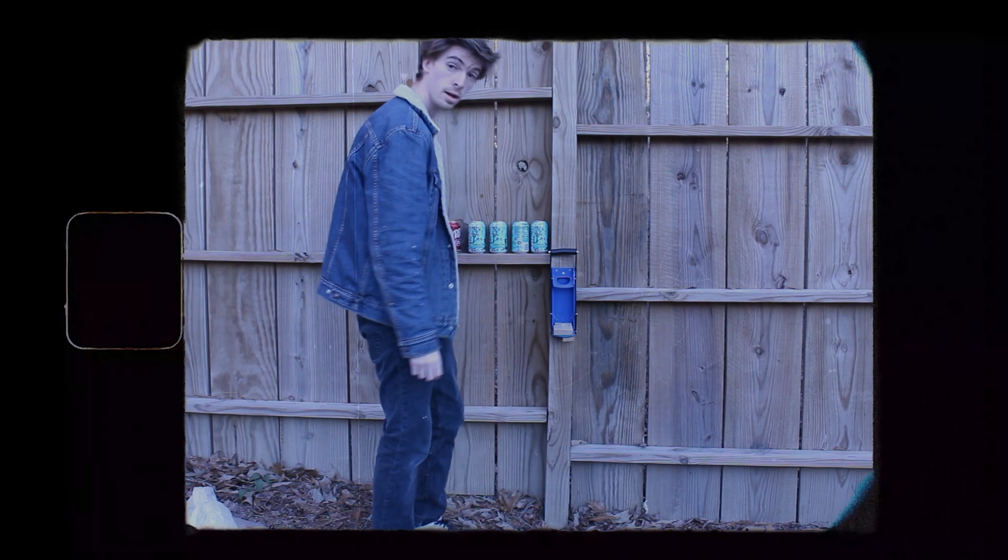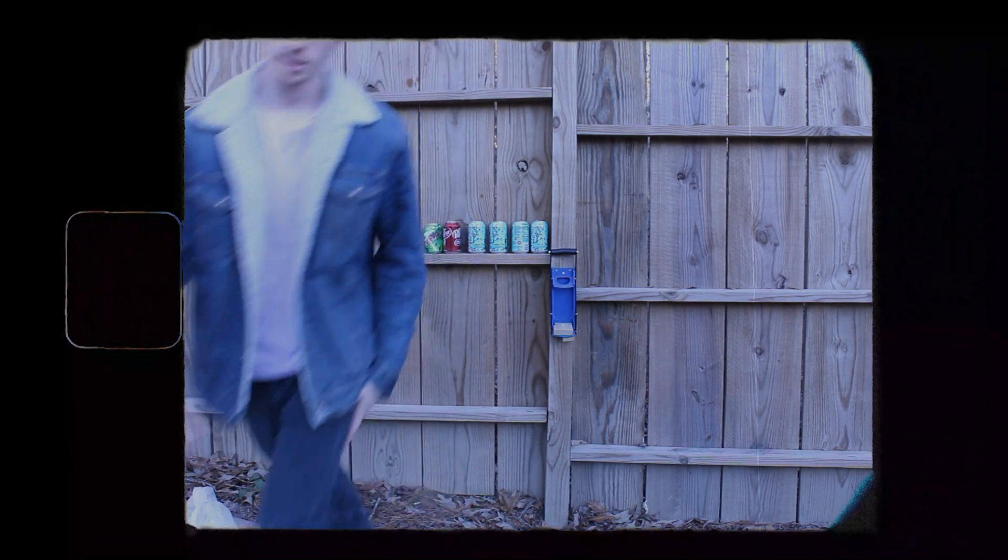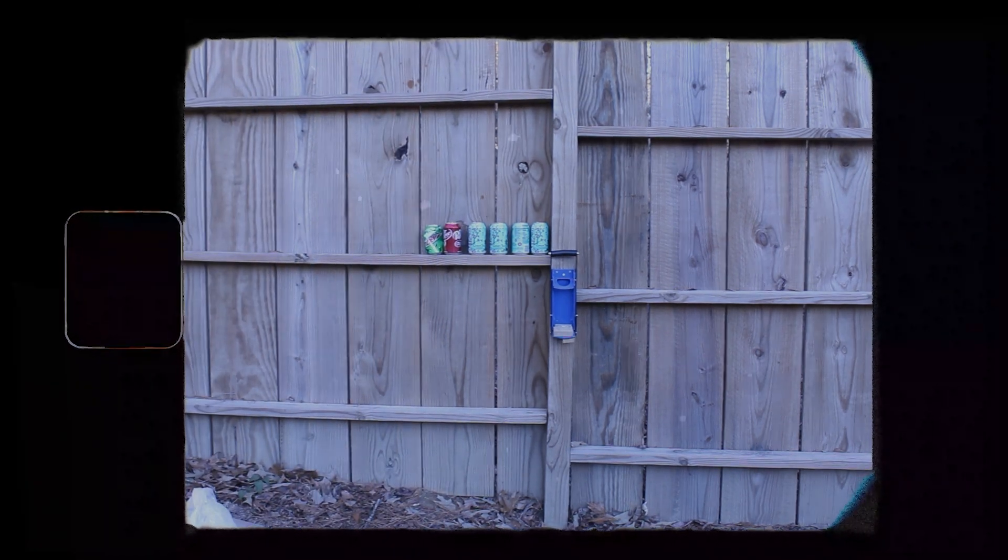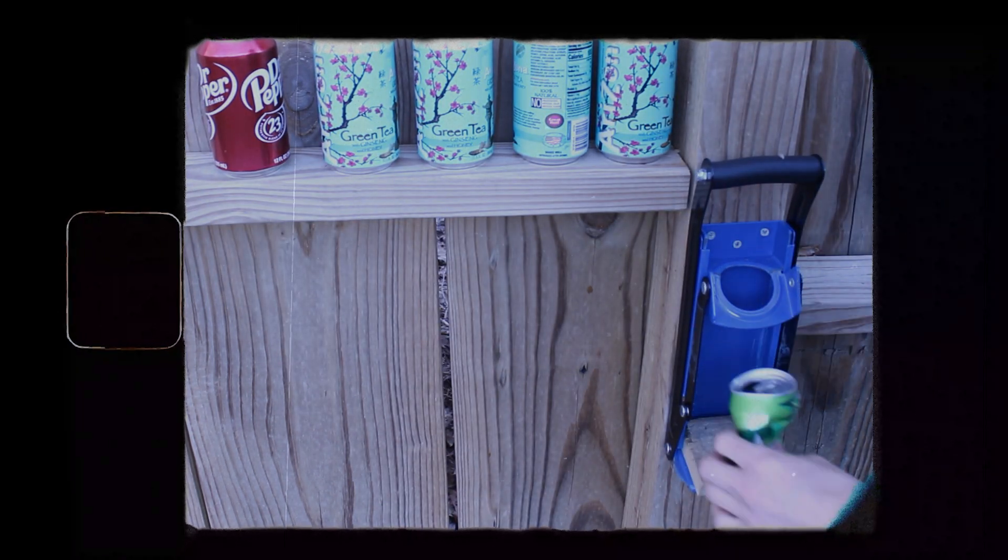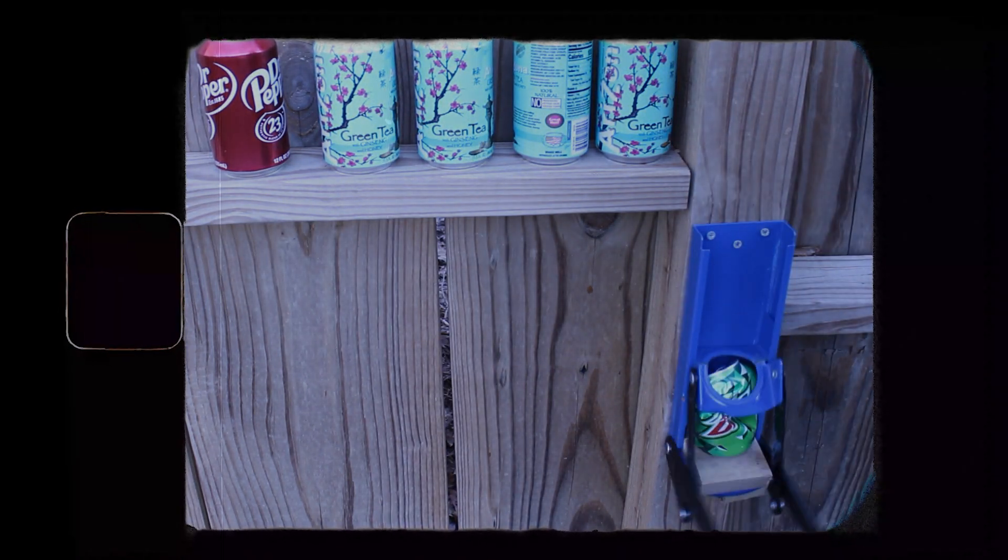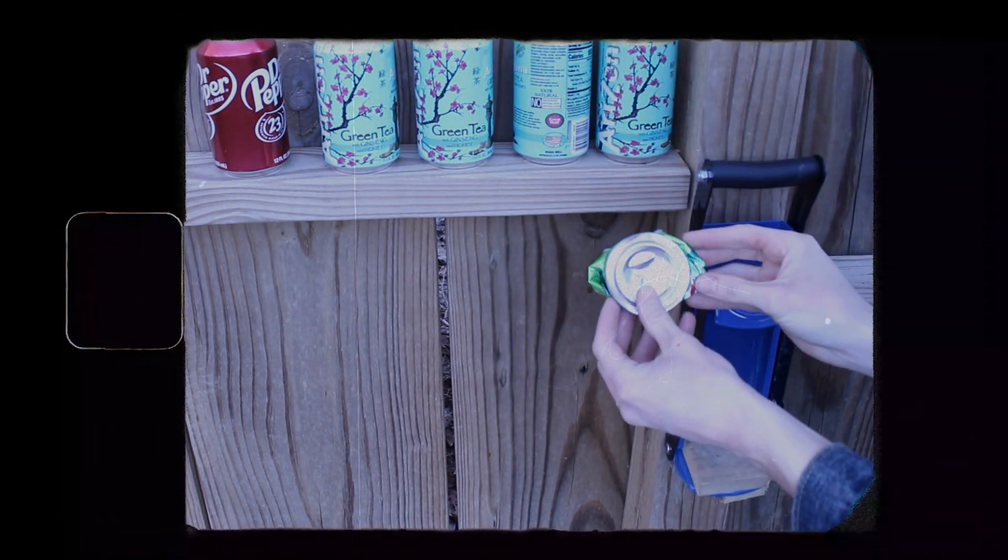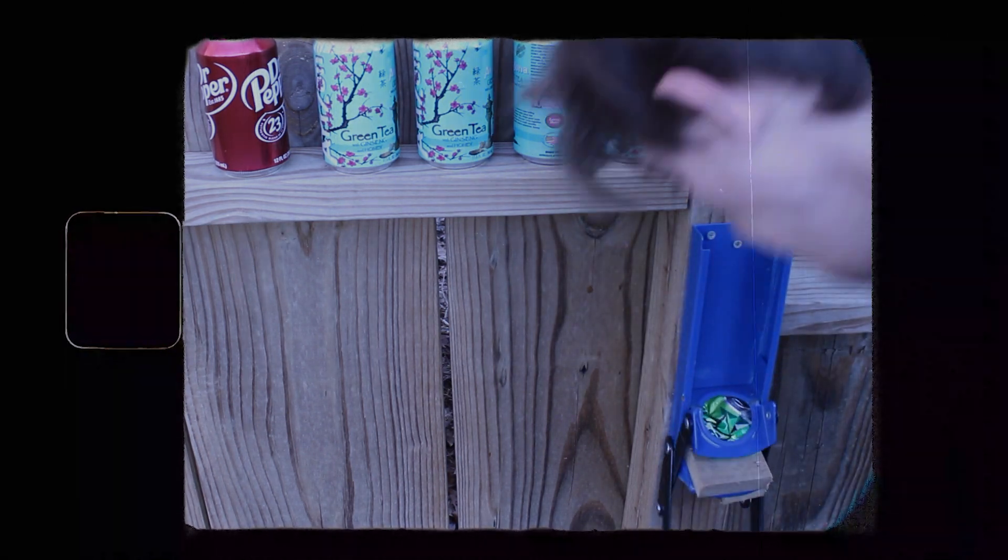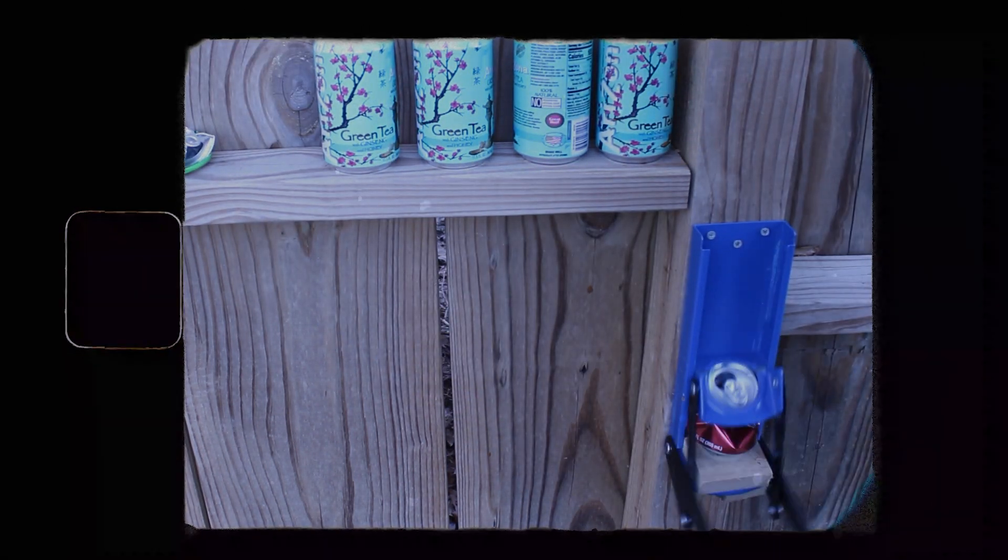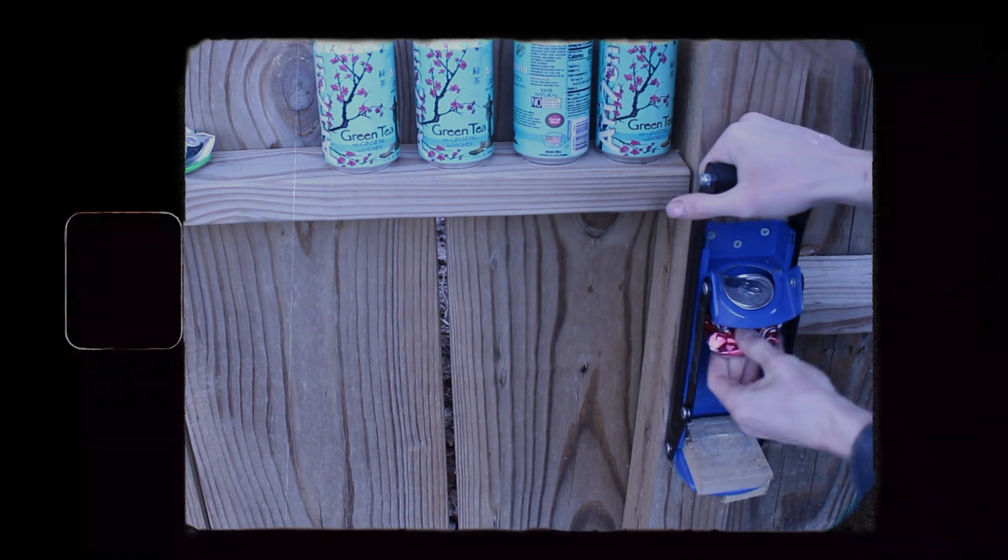But under the extreme pressures of ever-expanding industry, overuse has left our poor can crusher crushed itself. Its rim is bent, and this warp is causing cans to get stuck in the press, slowing down production and further damaging it. Something has to be done!